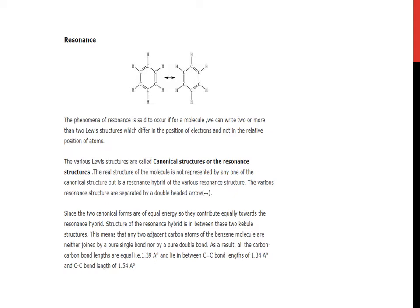The various Lewis structures are called canonical structures or the resonance structures. The real structure of the molecule is not represented by any one of the canonical structures but is a resonance hybrid of various resonance structures. The various resonance structures are separated by double-headed arrow.